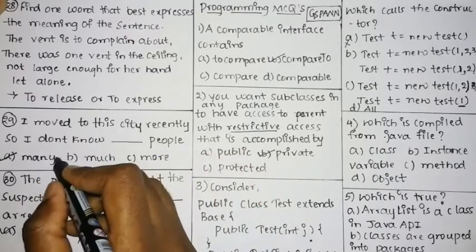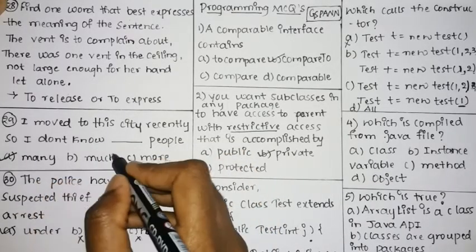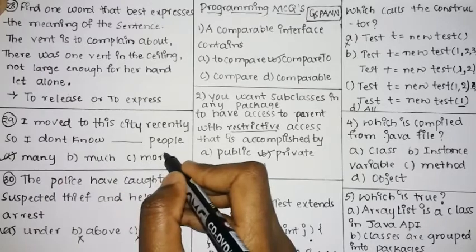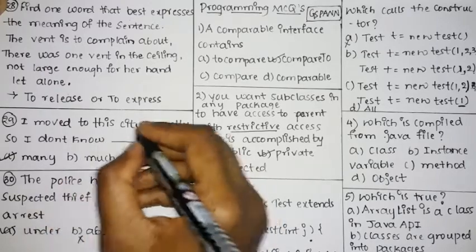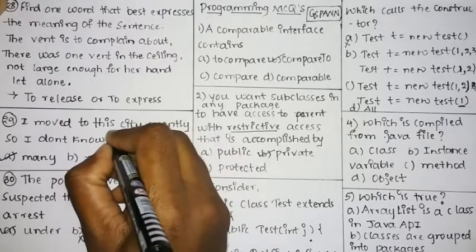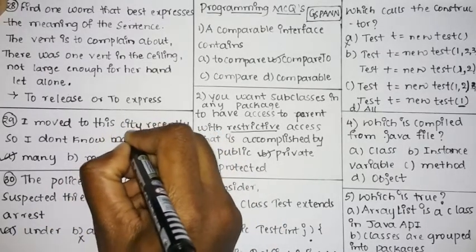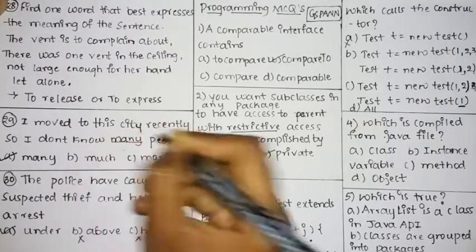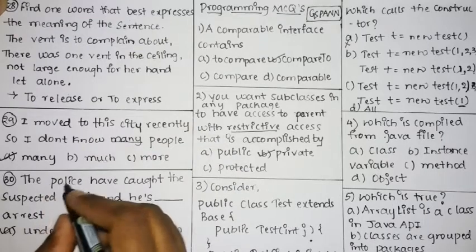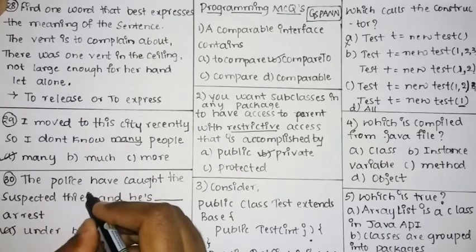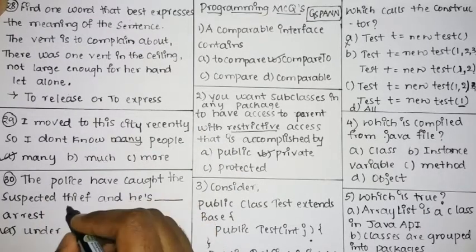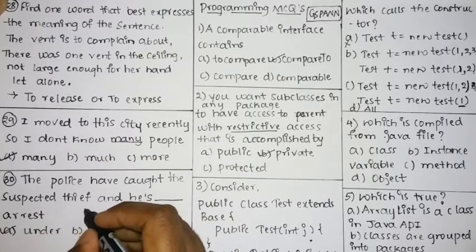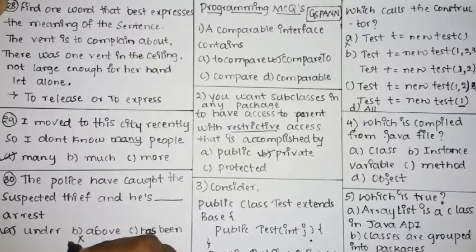Next: 'I moved to this city recently, so I don't know ___ people.' The options are many, much, or more people. The correct option is 'many people' — I don't know many people.